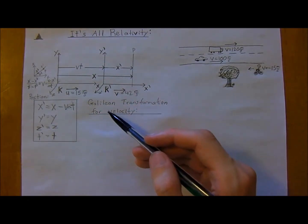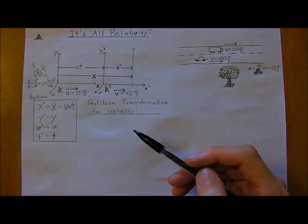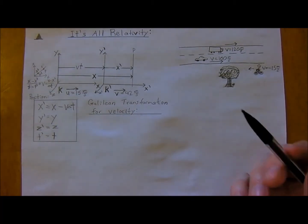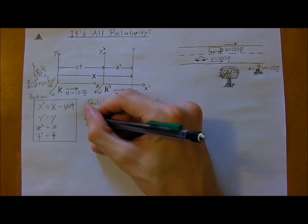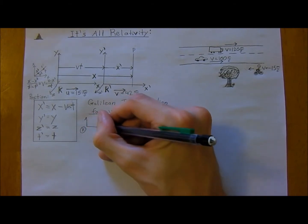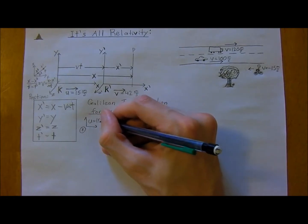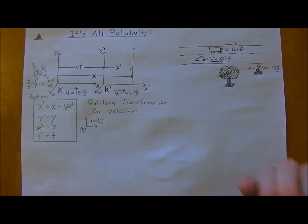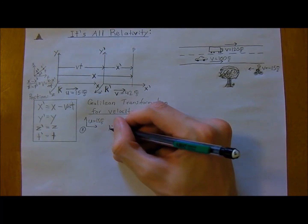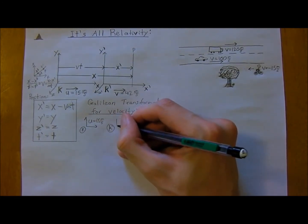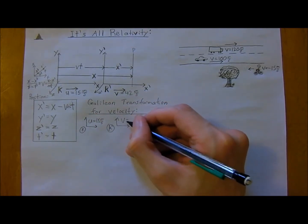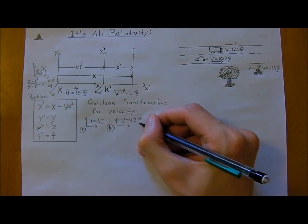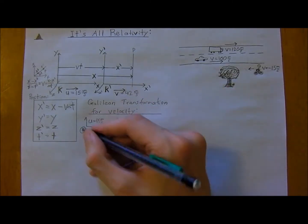So now for the Galilean transformation of velocity, which is a little more in depth, but it's really not too hard once you get your head around it. So we've still got the, we'll call it the k-axis, and you've got a velocity u of 15 meters per second. Then you've got the k-naught axes, and that has, I've got them up here too, a velocity of 42 meters per second.